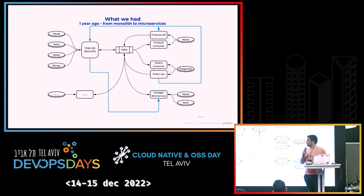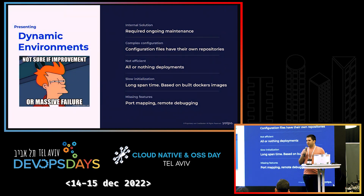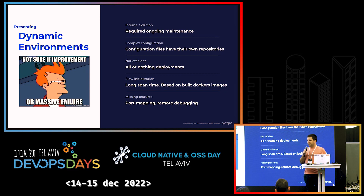We started coming up with ideas of how to tackle it — how can a developer work locally and have all the dependencies needed to make sure the system is working properly? Like most companies, we decided to build something on our own. We called it dynamic environment — allowing a person to raise their own isolated environment of the entire Yotpo system and run against it using their own Docker containers. The biggest problem was that our DevOps team needed to maintain it. We had a lot of feature requests, something didn't work, something was broken, and it took a lot of time and effort to maintain the system.